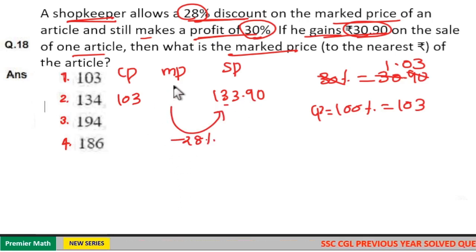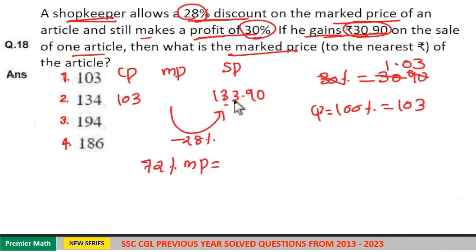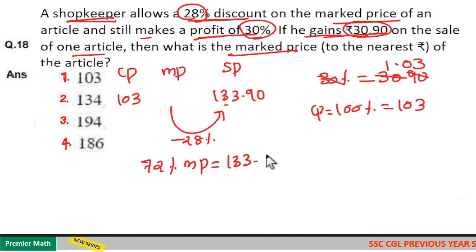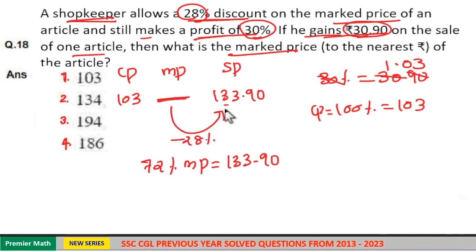If ₹100 is the marked price, then 100 - 28 leads to selling price. That is, 72% of the marked price equals ₹133.90, because if ₹100 is the marked price, then 100 - 28 gives us ₹133.90.